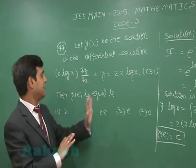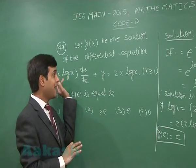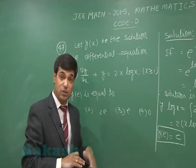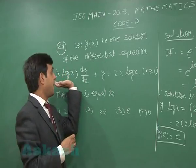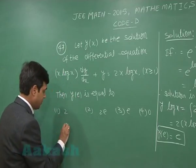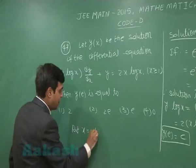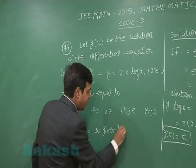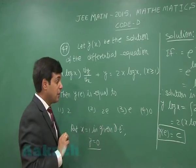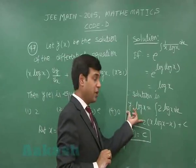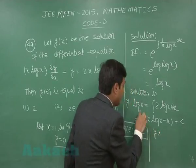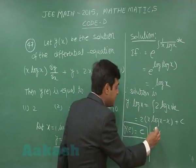If we consider substituting x = 1 in the given differential equation — noting it is not necessary that the differential equation is also satisfied by the solution — putting x = 1 in the given differential equation gives y = 0. Then putting x = 1 in our solution, since log(1) = 0, the left-hand side y·log(1) is also 0.